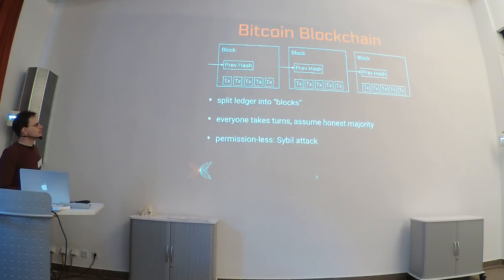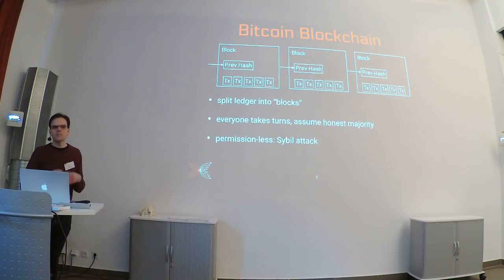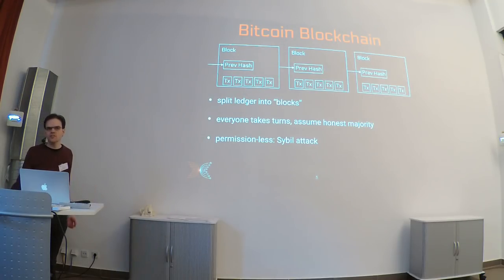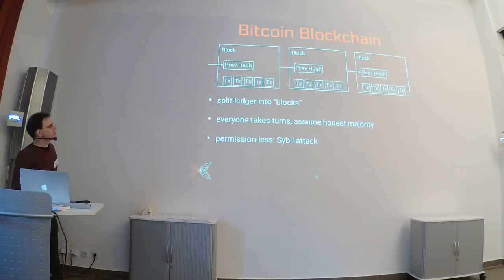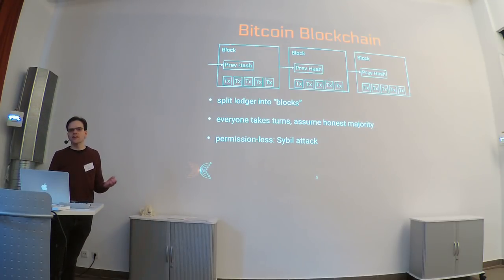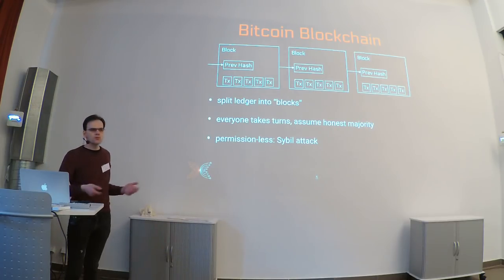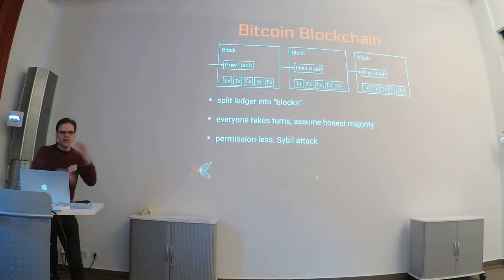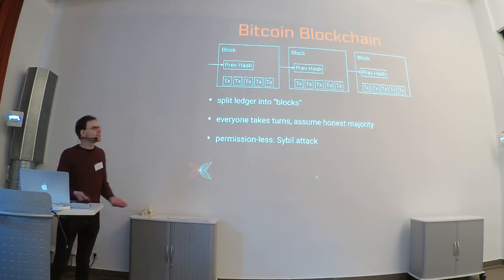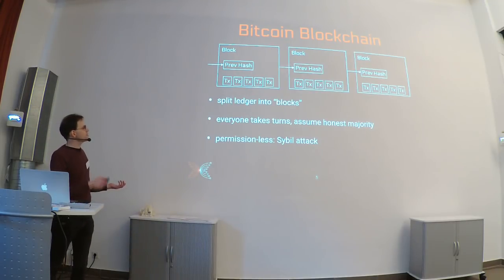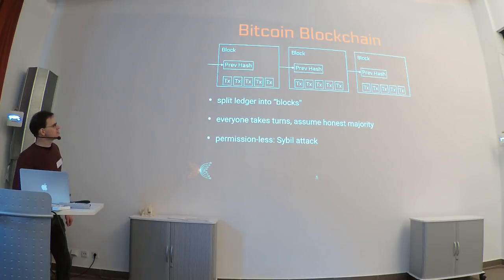Everybody takes turns creating a block from time to time, spreading the trust so you don't have to rely on any particular party. As long as the whole world doesn't conspire against you, your transactions will get through. But if the system is open to anybody and nothing prevents someone from registering many times, they could produce more blocks than anyone else and reject transactions or replace existing blocks. The trick Bitcoin uses is called proof of work.